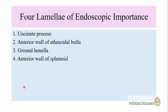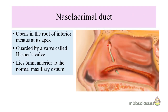The lateral wall of the nose is of utmost importance for endoscopic sinus surgery. There are four lamellas encountered in endoscopic surgery: the first is the uncinate process, the second is the anterior wall of the ethmoidal bulla, the third is the ground lamella or basal lamella, and the fourth is the anterior wall of the sphenoid. The nasolacrimal duct, which connects the lacrimal sac with the nasal cavity, opens into the inferior meatus at about one centimeter from the anterior end of the inferior turbinate, guarded by the Hasner's valve, and lies five millimeters anterior to the normal maxillary ostium.